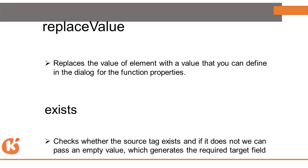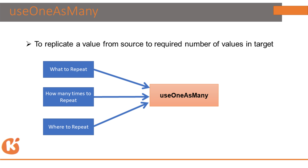We also have Replace By Value, and Use One As Many. Use One As Many is used when you want to repeat a field value across multiple sections. It takes three inputs: what value you want to repeat, how many times, and in which context. You use this to repeat a particular value as many times as needed.